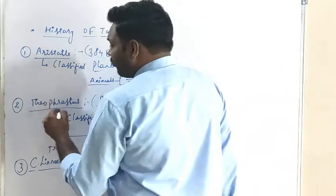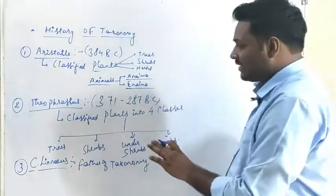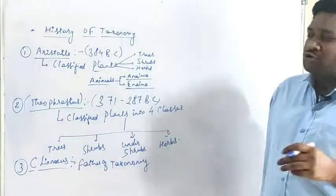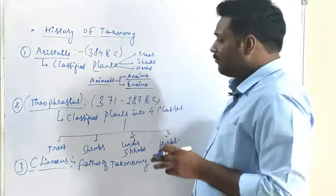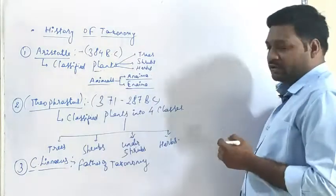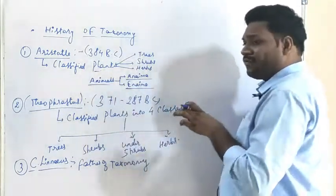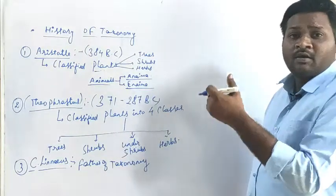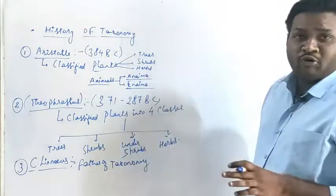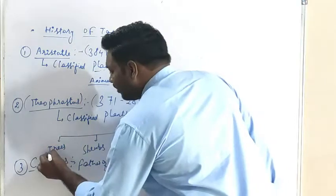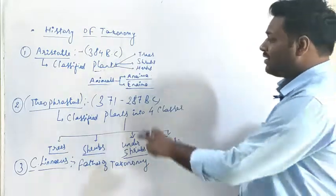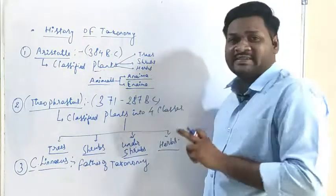One more contribution I would like to mention — that is Theophrastus. He was a well-known student of Aristotle and is also referred to as a botanist. He studied different plants and mentioned them in his own book. He classified plants into four main categories: trees, shrubs, undershrubs and herbs. His contribution was given during 371 to 287 BC.